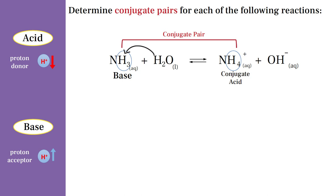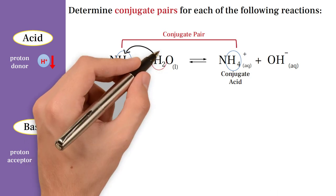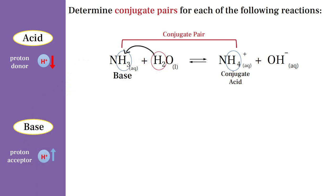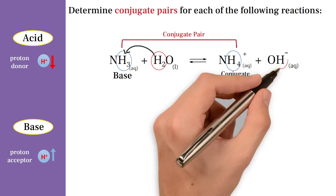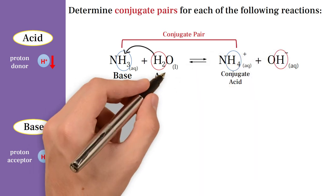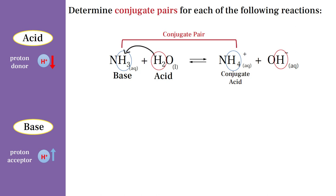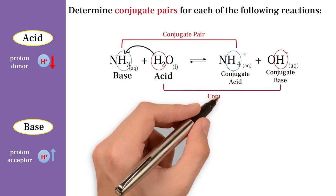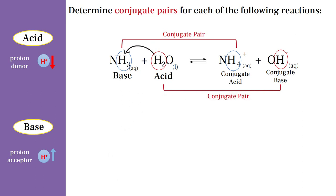While water, as we can see, is the acid in the forward reaction because it is a proton donor. The hydroxide ion is the base in the reverse reaction and is called the conjugate base. Thus, water and hydroxide ion together also form a conjugate pair of acid and base.